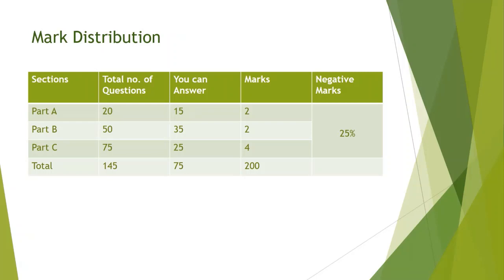For Part A, the total number of questions is 20; you can answer a maximum of 15 questions and will get 2 marks for every right answer. For Part B, total number of questions is 50 and you can answer a maximum of 35 questions, getting 2 marks for every right answer. For Part C, total number of questions is 75 and you can answer a maximum of 25 questions, getting 4 marks for every right answer.